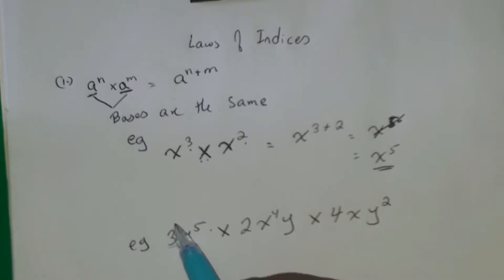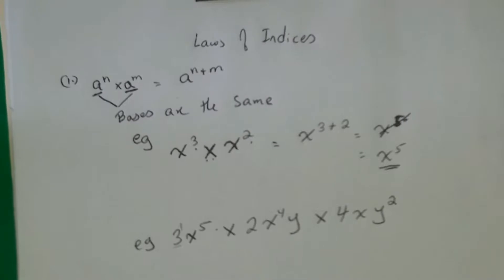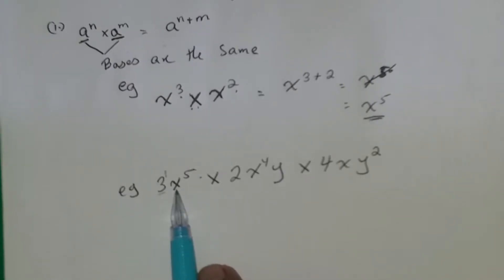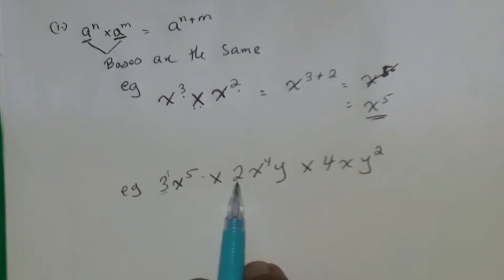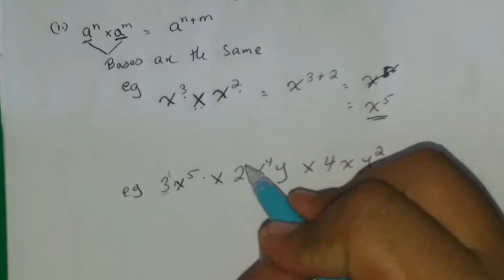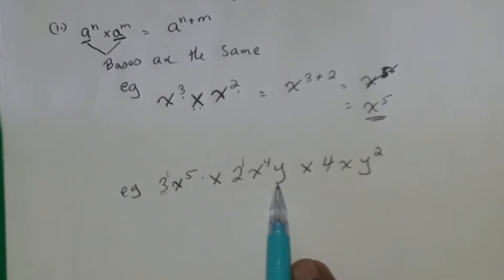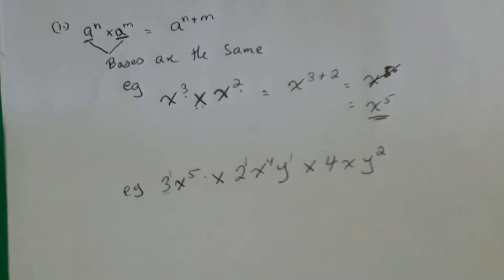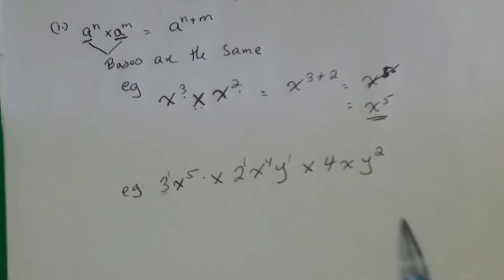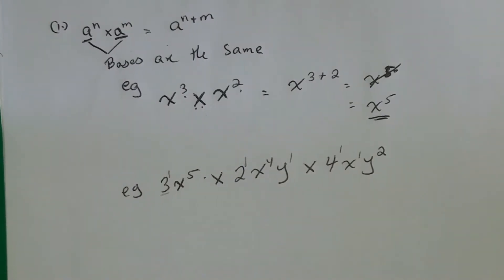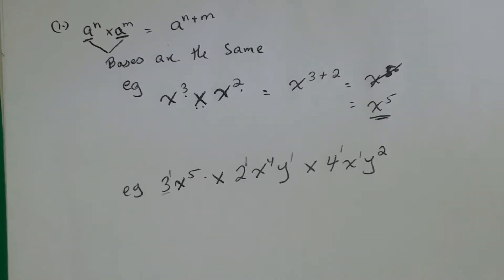Let's analyze what we have. The 3 does not have a power, but we know that if a number or letter does not have a power, it is always 1. So: x has a power of 5; 2 has a power of 1; x has a power of 4; y has a power of 1; 4 has a power of 1; and the last x has a power of 1. Anytime a coefficient or letter has no written power, we always put a 1.